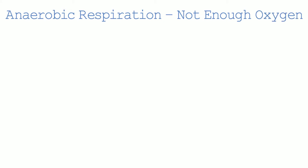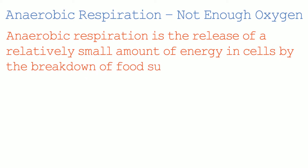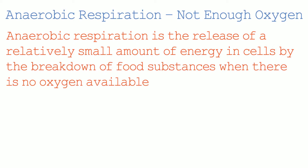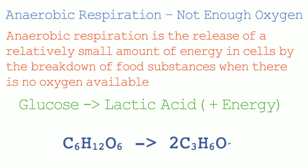Now let's have a look at anaerobic respiration. Anaerobic respiration occurs when there's not enough oxygen. If there was sufficient oxygen available, we would only see aerobic respiration. However, if there was less than a sufficient amount of oxygen available, we would also see anaerobic respiration occur. Anaerobic respiration is the release of a relatively small amount of energy in cells by the breakdown of food substances when there is no oxygen available. Less energy is produced compared to aerobic respiration because anaerobic respiration is the incomplete breakdown of glucose. This results in energy and lactic acid being formed. The word equation is: glucose breaks down to form lactic acid and energy. Energy is in brackets again because it isn't a substance.